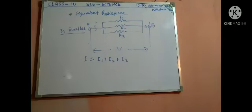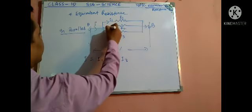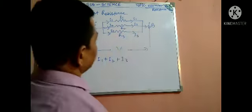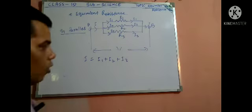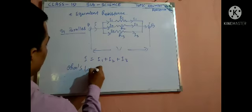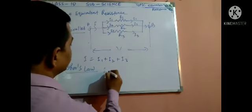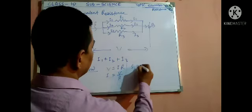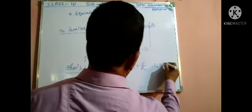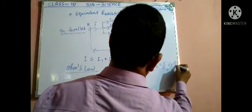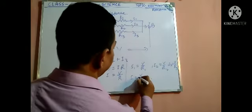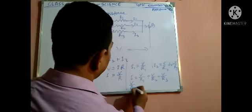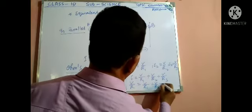All the algebraic terms: current I passes through I1, I2, and I3. All combined together. According to Ohm's law, since V = IR, so I = V/R. Therefore I1 = V/R1, I2 = V/R2, and I3 = V/R3. So I equivalent = V/R1 + V/R2 + V/R3, and I = V/R1 + V/R2 + V/R3.